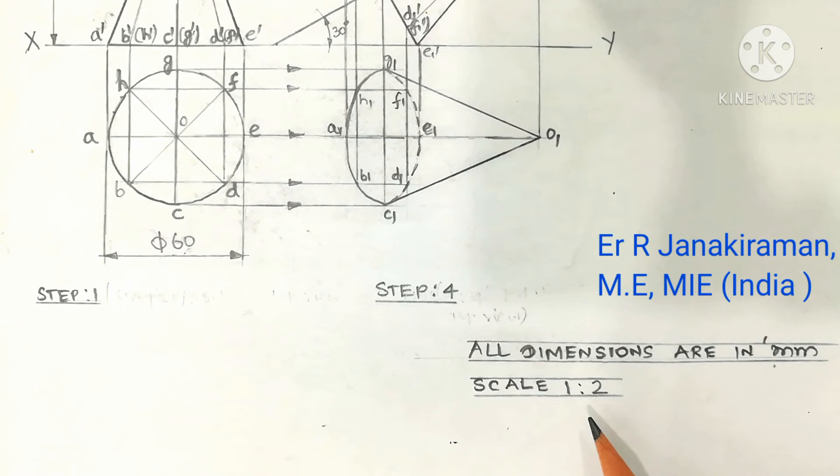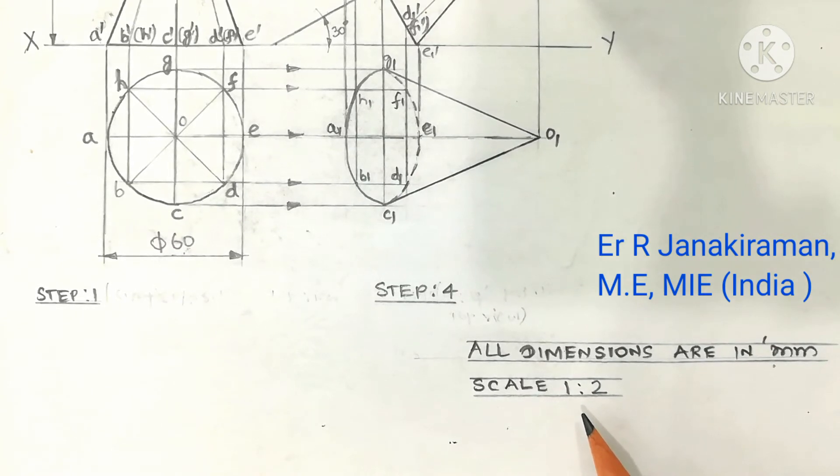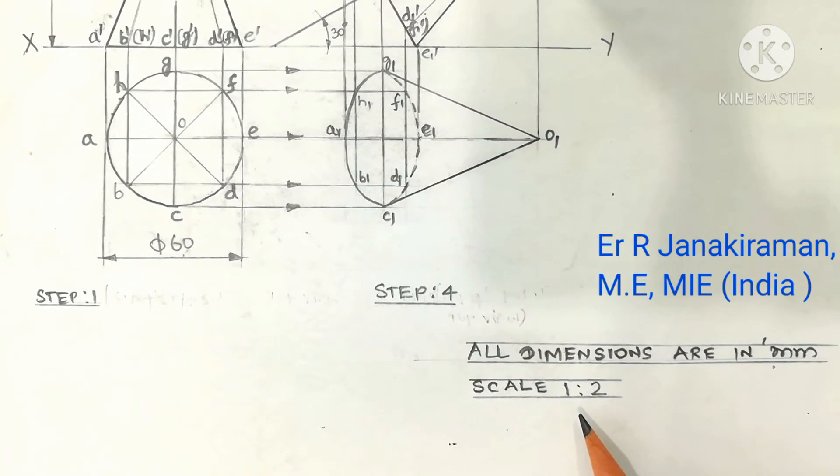Suppose you enlarge the size, I mean double the size, that is called enlarged scale. That is two times increase.